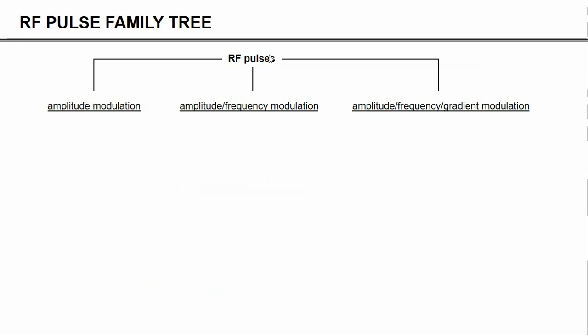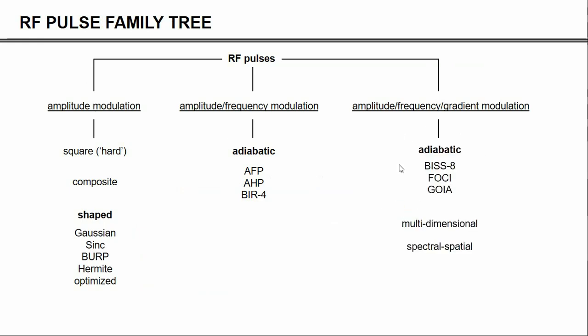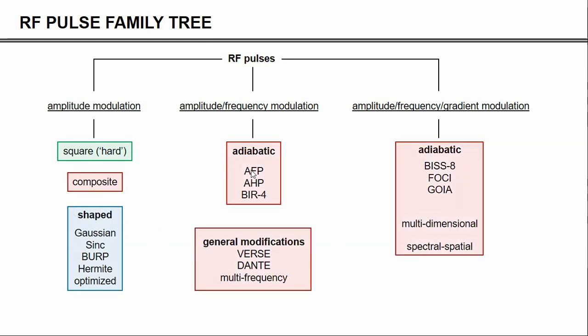Now, there are literally hundreds of different RF pulses, and they can be grouped in a number of categories. In the first category, we have the most commonly used ones, including square and shaped RF pulses. The second category includes adiabatic RF pulses. The third one includes multidimensional and spectrospatial pulses, and has a whole bunch of modifications. For today's video, we'll focus only on square or hard RF pulses. The next video will focus on shaped RF pulses, and a third video will discuss the more advanced adiabatic and other RF pulses.